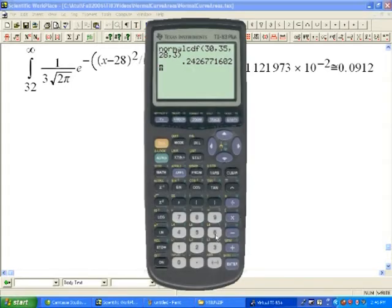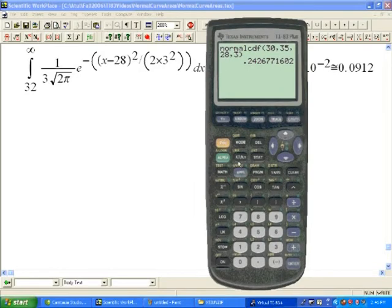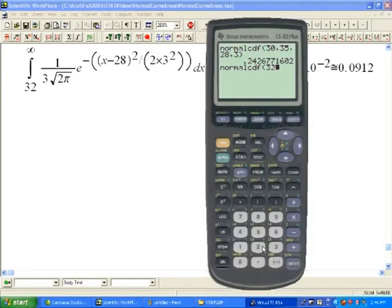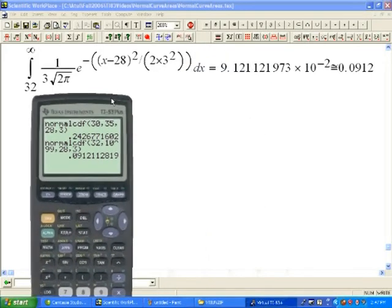In TI-83, if we would like to do the same problem, go to second distribution. Go to normalcdf. We are starting at 32 and I don't have any key for infinity here. This is simply a symbolic thing, so let's give the calculator the largest number that it can handle for that purpose. Let's go 10 to the 99, which is like a tenth of a googol. We just tell the mean and the standard deviation, the two key parameters, and it should give us the answer. We still have the same answer here.